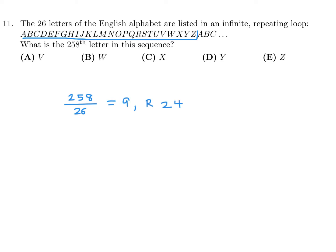So the last loop will have 24 letters in it. The 24th letter goes all the way till X, because Y is the 25th and Z is the 26th. So X is the 258th letter.